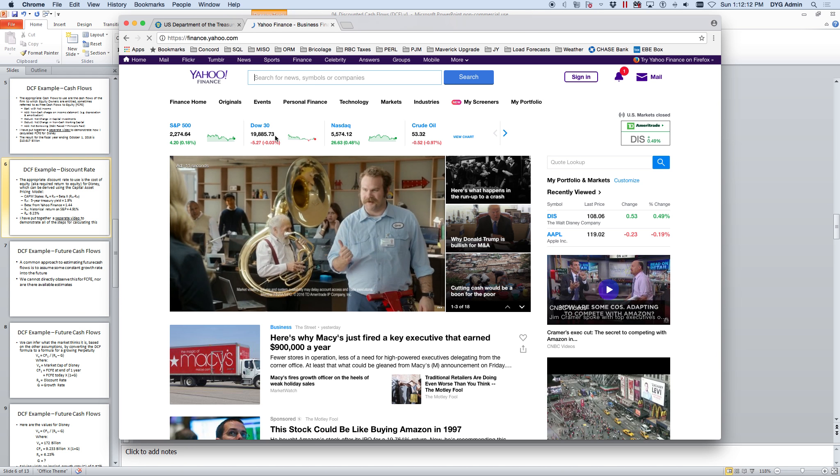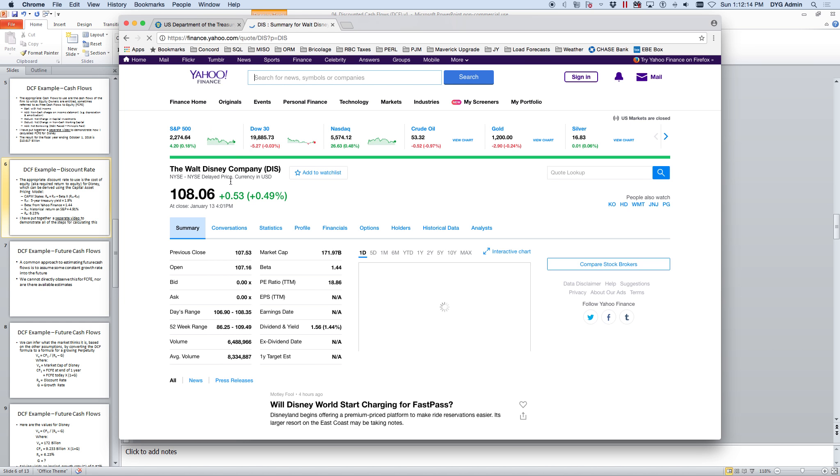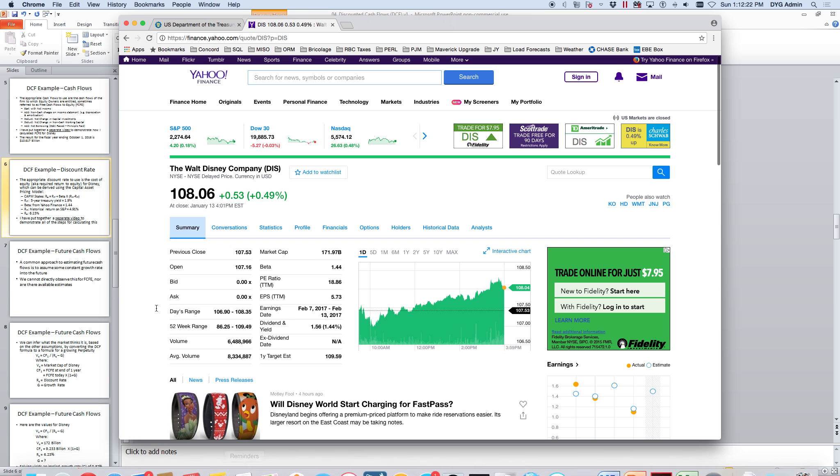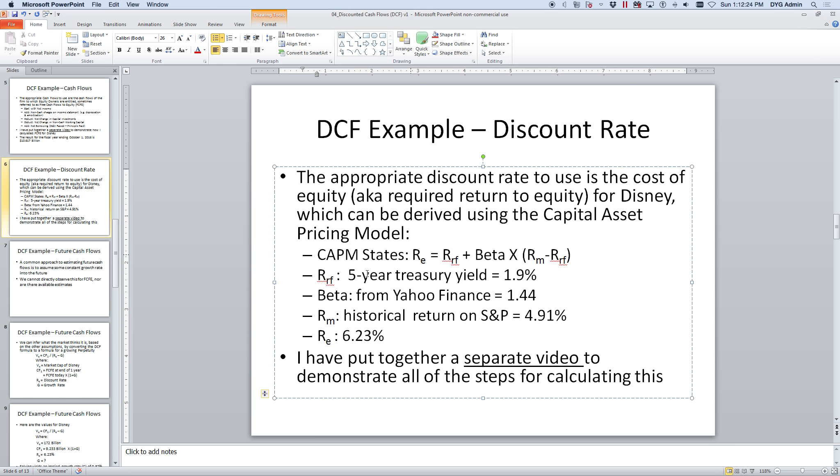We're doing this for Disney, so I'll put in DIS. Hit the search. It brings up the Walt Disney Company. And you can see that it lists a beta of 1.44. So I'm just going to put that in right here.